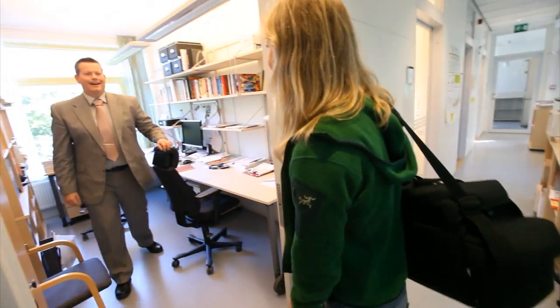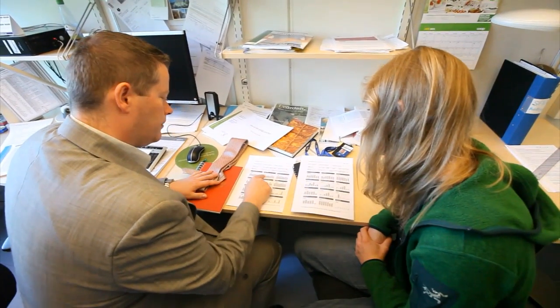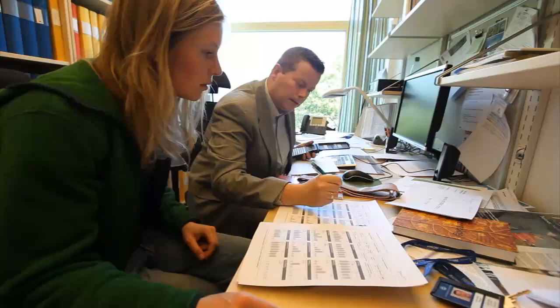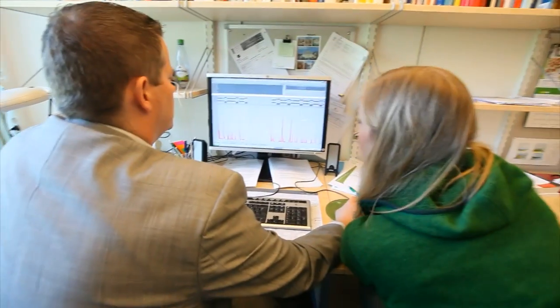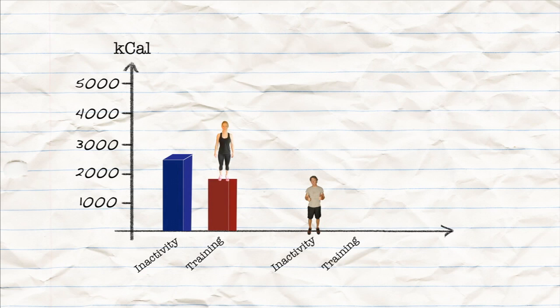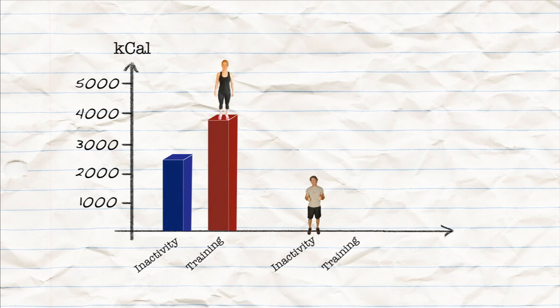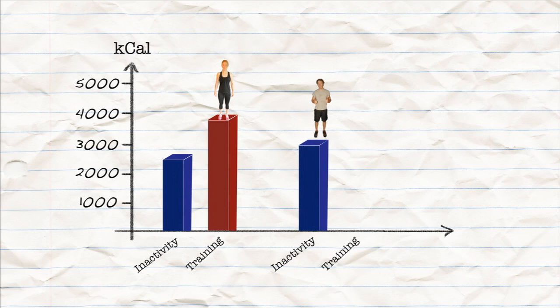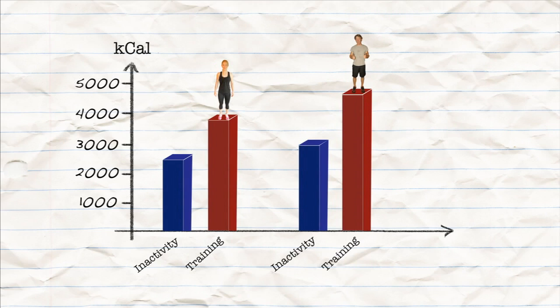We're done with two weeks of training — now it's time to compare the results. The chemical analysis of the double labeled water from our urine samples showed that I went from using around 2,500 kilocalories per day during inactivity to around 3,800 kilocalories during the weeks of training. And I went from using about 3,000 kilocalories per day to about 4,700 kilocalories per day.